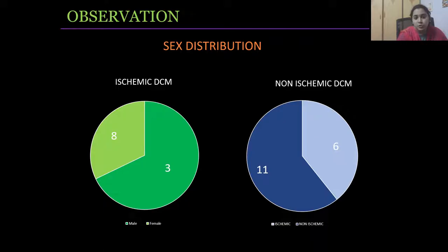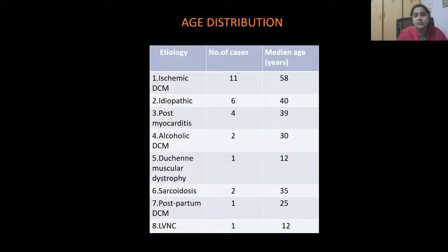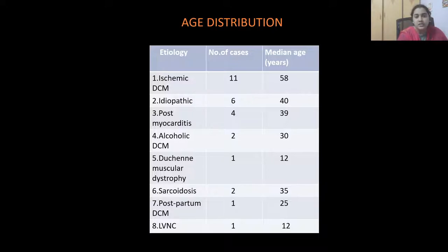Sex distribution: in ischemic DCM, 8 males and 3 females; in non-ischemic DCM, 11 males and 6 females. Age distribution: ischemic DCM — 11 cases, median age 58. Idiopathic — 6 cases, median age 40. Post-myocarditis — 4 cases, age group 39. Alcoholic DCM — 2 cases, age group 30. Duchenne's muscular dystrophy — 1 case, age 12. Sarcoidosis — 2 cases, age group 35. Postpartum DCM — 1 case, age 25. LVNC — 1 case, age 12 years.